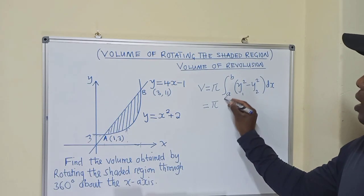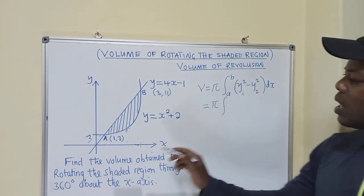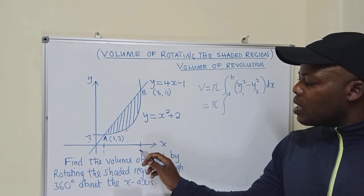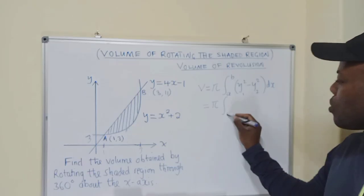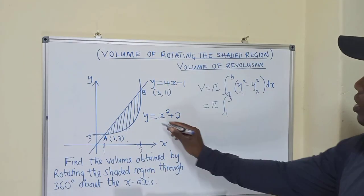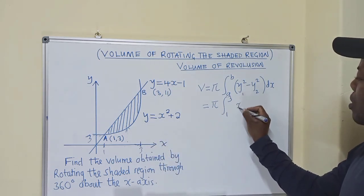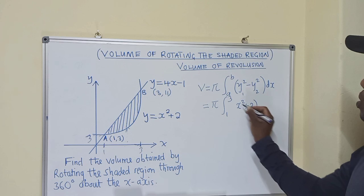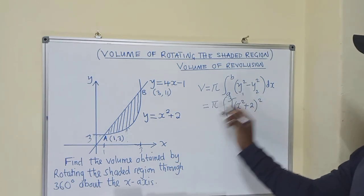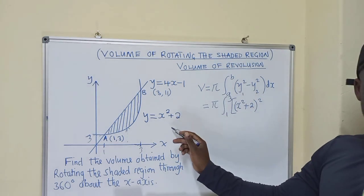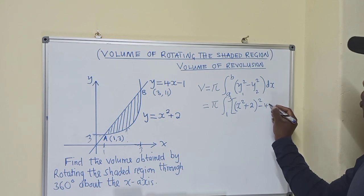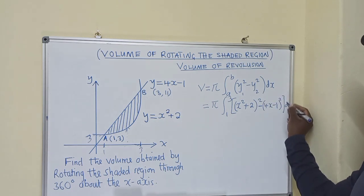So now we say pi, the integral. The numbers to put here — since it's around the x-axis, we use the x values: the lower limit is 1 and the upper limit is 3. So here it will be 1 and 3. The first equation we touch is x squared plus 2, squared. Minus the second equation, 4x minus 1, also squared, with respect to x.